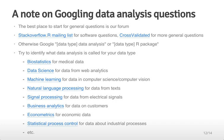A note on Googling data analysis questions. The best place to start for general questions is on R forums. Stack Overflow and the R mailing list can be used for software questions, but you should stick to CrossValidated for more general questions. Otherwise, you can google data type, data analysis, or data type, R package, where you replace data type with the data that you're interested in. For example, gene expression, data analysis, or gene expression, R package. Another important thing to keep in mind is that you have to try to identify what data analysis is called for your data type. Data analysis isn't always called the same thing in all fields. In medical data, the data analysis is called biostatistics. Data analysis for web analytics is called data science. Data analysis for computer vision is called machine learning. Data analysis for learning about the structure of text is called natural language processing, and so on and so forth. Knowing what to call data analysis can often be half the hurdle.